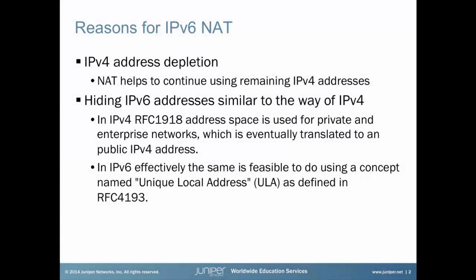The use of NAT has a long history, and the two major use cases are its usage as a means to cover address depletion in IPv4, and the other widespread reason to use NAT is for security reasons. NAT has also found its way into IPv6, where it can be used to hide public or private IPv6 addresses, similar to IPv4 NAT with RFC 1918 address space. In IPv6 there is a special address space for that matter, named Unique Local Address, which has been defined in RFC 4193.